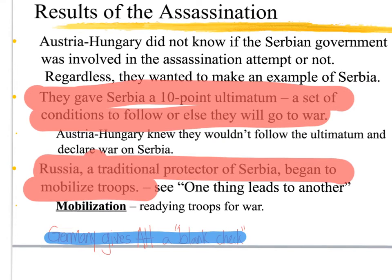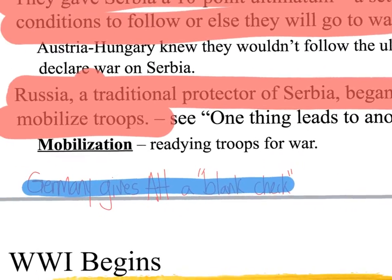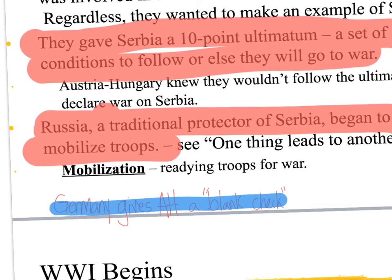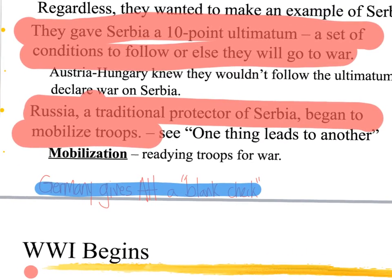Germany is actually going to get blamed for starting World War I because the leader of Germany at the time — Kaiser Wilhelm II — is going to give Austria-Hungary a blank check. That means you can do whatever you want: if you want to go to war, we got your back. So Germany gives them the okay since they're in the Triple Alliance together. Russia then, who has a bilateral alliance with Serbia as a traditional protector, doesn't want Serbia to be attacked by Austria-Hungary. So Russia started to mobilize their troops — meaning preparing for war.